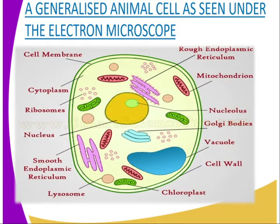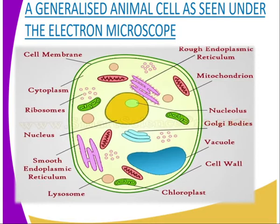There are different organelles in the animal cell. As you can see, we have several of them: the cell membrane, the cytoplasm, the ribosomes, the nucleus, the smooth endoplasmic reticulum, the lysosome, the vacuole, the Golgi bodies, the nucleolus, the mitochondrion, and the rough endoplasmic reticulum.